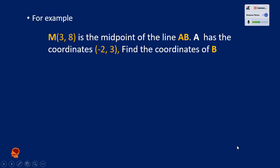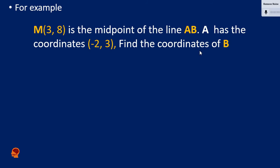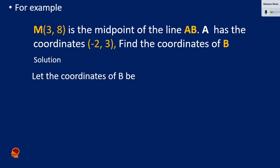The question says M(3, 8) is the midpoint of line AB. We are given the endpoint of A, but we do not have the point for B. B remains unknown. To represent an unknown endpoint, we use a variable. In this case, we will use w for the x-coordinate and m for the y-coordinate to specify the unknown endpoint for B.